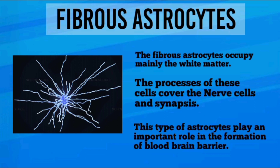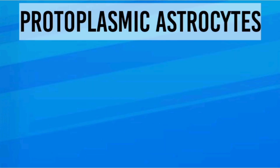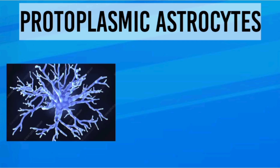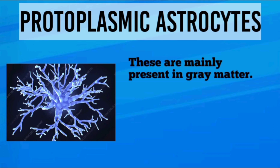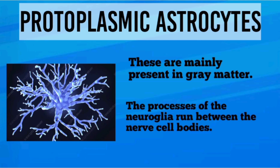Protoplasmic astrocytes are present mainly in gray matter. The processes of the neuroglia run between the nerve cell bodies.